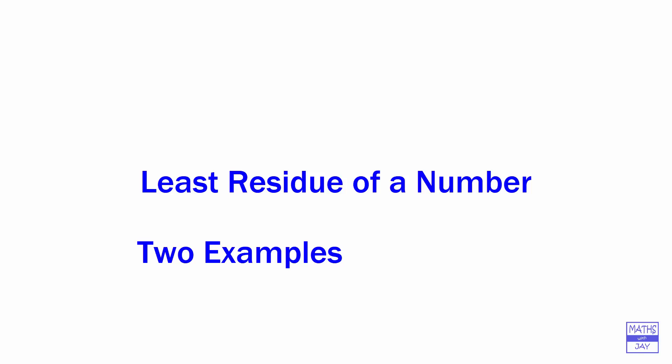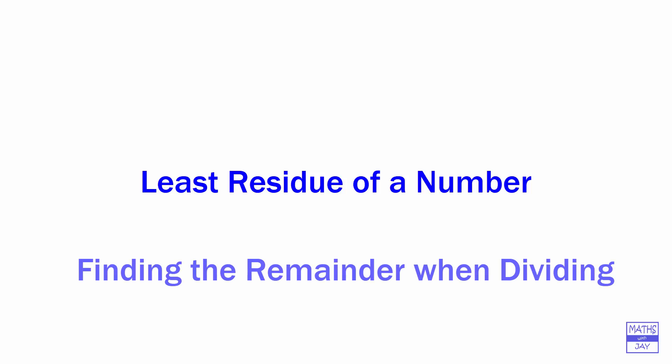First of all we'll start with a small example, small number, and then we'll look at a much bigger one. So what we're really doing when we're looking for a least residue is we're looking to find the remainder when dividing.